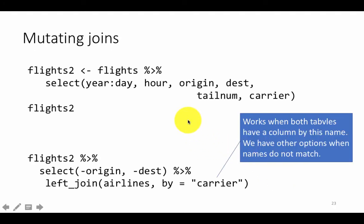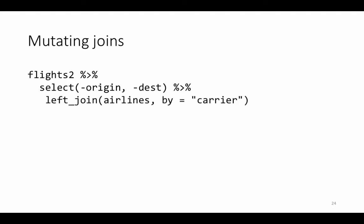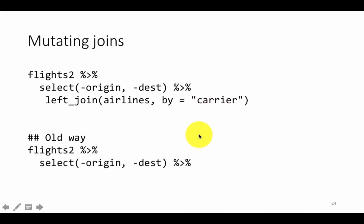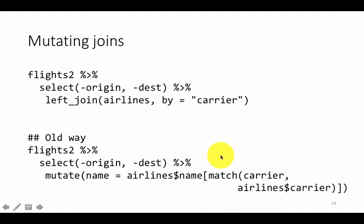This is what we call a mutating join — a join that adds new columns to the original table. Remember earlier when we said mutate, we used that to add new or computed columns to an existing table. That's why we're calling this a mutating join. This could also have been done using plain R syntax instead of by equals carrier, but that approach is much more verbose, so we'll just say join by a particular field.